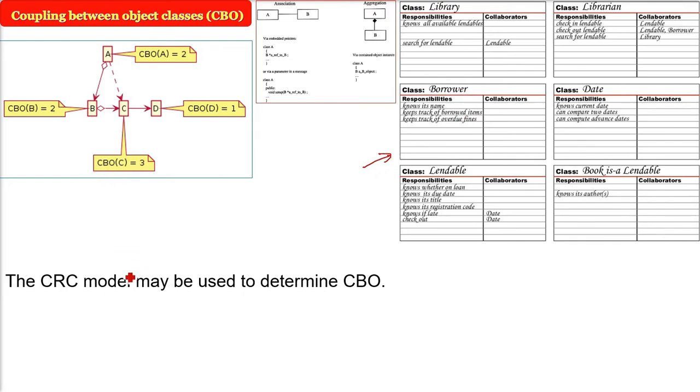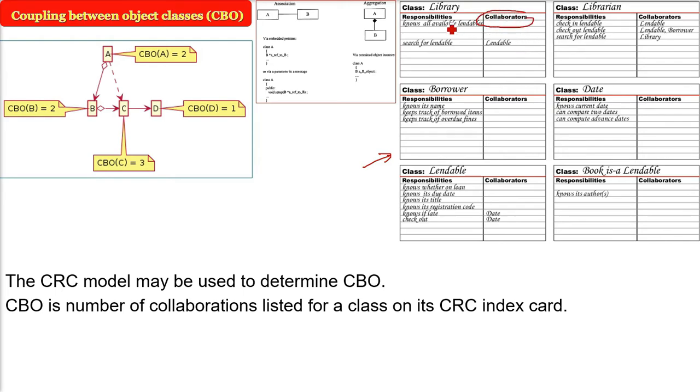So the CRC model may be used to determine the coupling between object classes. And this can be taken from CRC index card. So CBO is number of collaborations which are listed in the class, as is in CRC index cards. You see here, this is the collaborators, these are the collaborating classes. So all this we can get it from CRC index card.